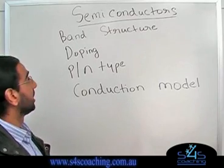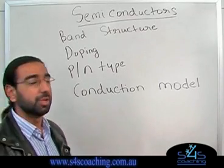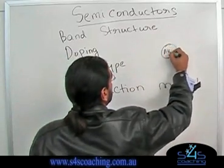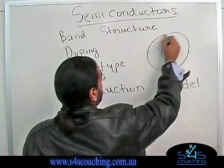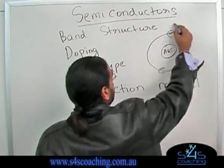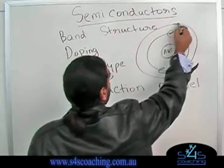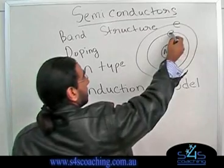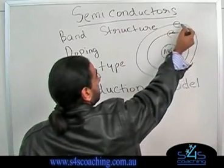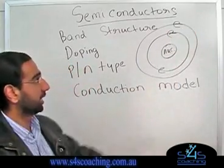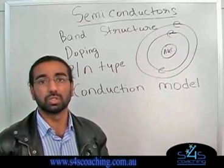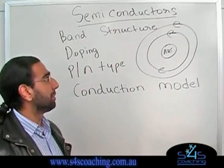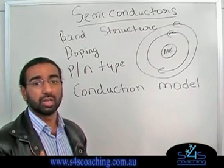So looking at the first thing: the band structure. This is what an atom looks like. I have the nucleus in the middle, and I have the electrons going around it. These electrons are going around in discrete energy levels. So this electron can be here — this is one energy level — this is another energy level. The electrons are in discrete energy levels. Due to Pauli's exclusion principle, there can be a maximum of one electron in a state.